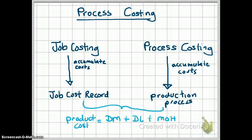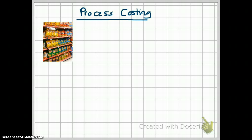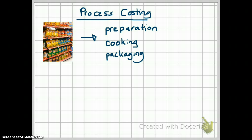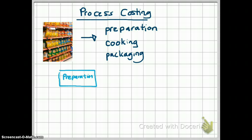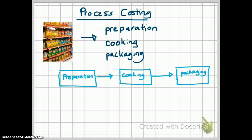Let's take a look at what production process means. Let's assume we have a potato chips manufacturer. Their process can be simplified into three departments: the department that prepares the potatoes, the next department which cooks the potatoes, and the final department where they pack the chips and ship them. So in your potato chips plant, you have one department for preparation. Once the potatoes are prepared and cut, they are transferred to the cooking department where they are deep fried. Once deep fried, they are transferred to the packaging department. This company would allocate all their costs based on their departments.